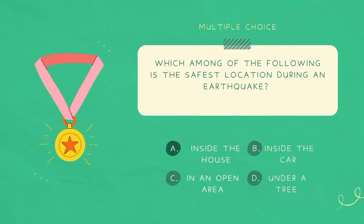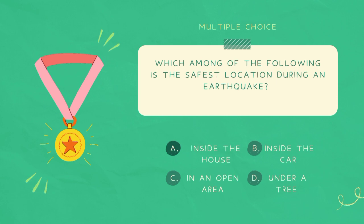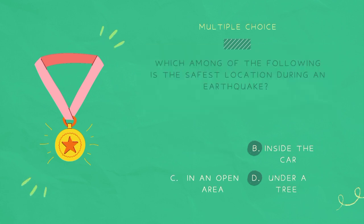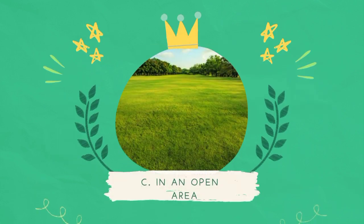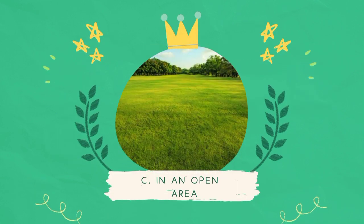Which among the following is the safest location during an earthquake? A. Inside the house. B. Inside the car. C. In an open area. D. Under a tree. The answer is C. In an open area.